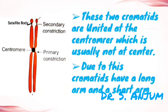There is also a secondary constriction, present sometimes in some chromosomes. The distal or terminal end has a constriction called secondary constriction, and these distal parts of the chromatid are called satellite bodies. Due to the variable position of the centromere, chromatids have a long arm and a short arm, and both chromatids are united at the centromere.